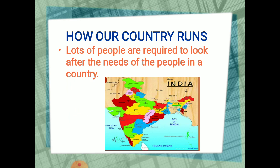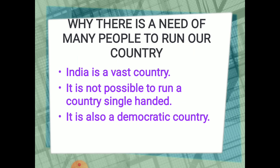So, to make it easy, we need a lot of people to run a country properly. India is a big country — it is a vast country. It is impossible for a single person to keep it functional in a proper way. It is also a democratic country. A democratic country means a country where the actual power lies in the hands of the common people. In a democratic system of government, people who are 18 years of age or above can vote and elect their representatives. Through this, a country runs.